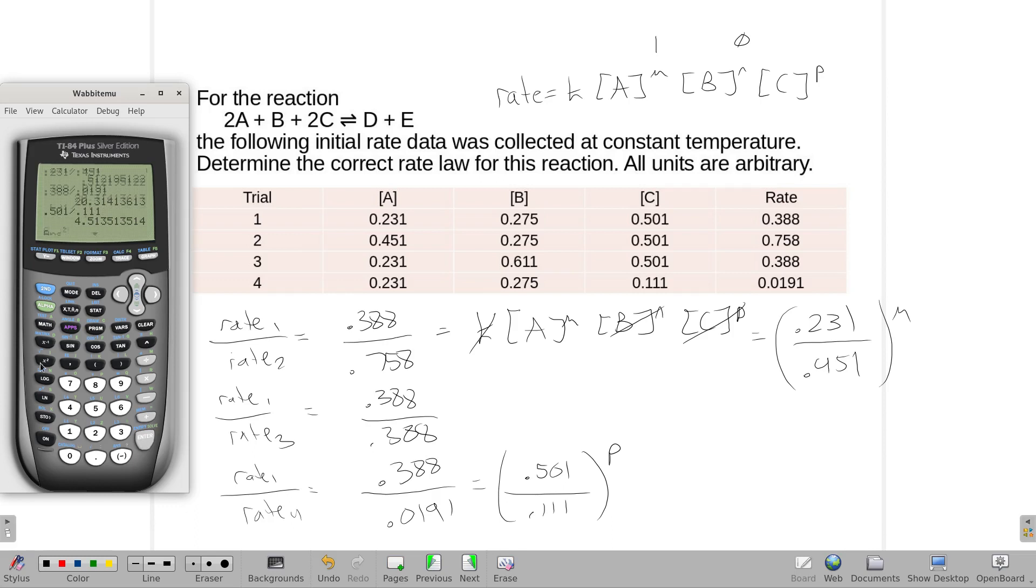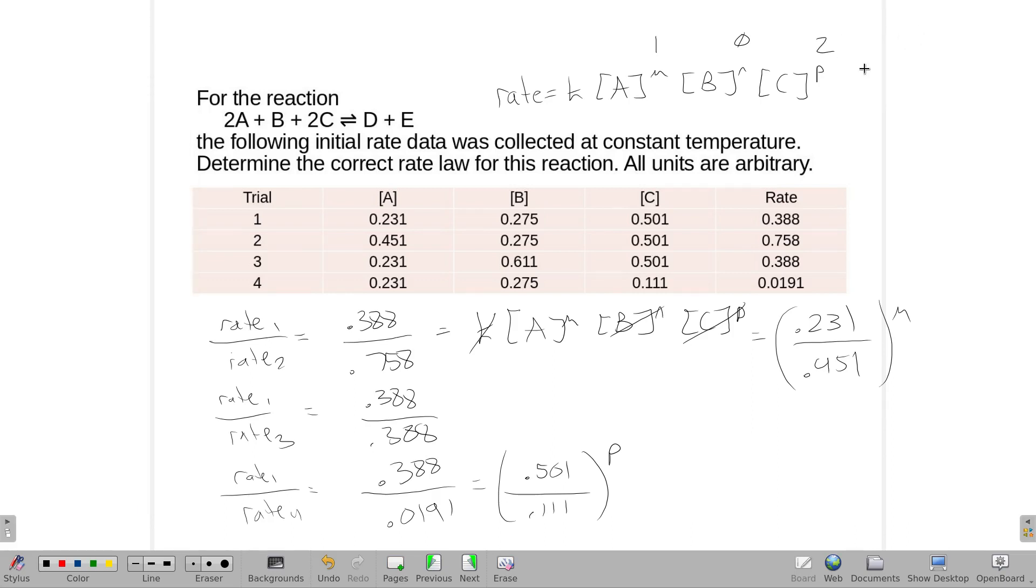Well, that's roughly squared. P is a 2. So, my rate law has that 1, 0, and 2. Remember, since it's 0, it might not even be there. So A to the first and C to the second. And if I need to solve for K, if it wants that, just pick one of the trials, plug in all the values, and then solve for K.